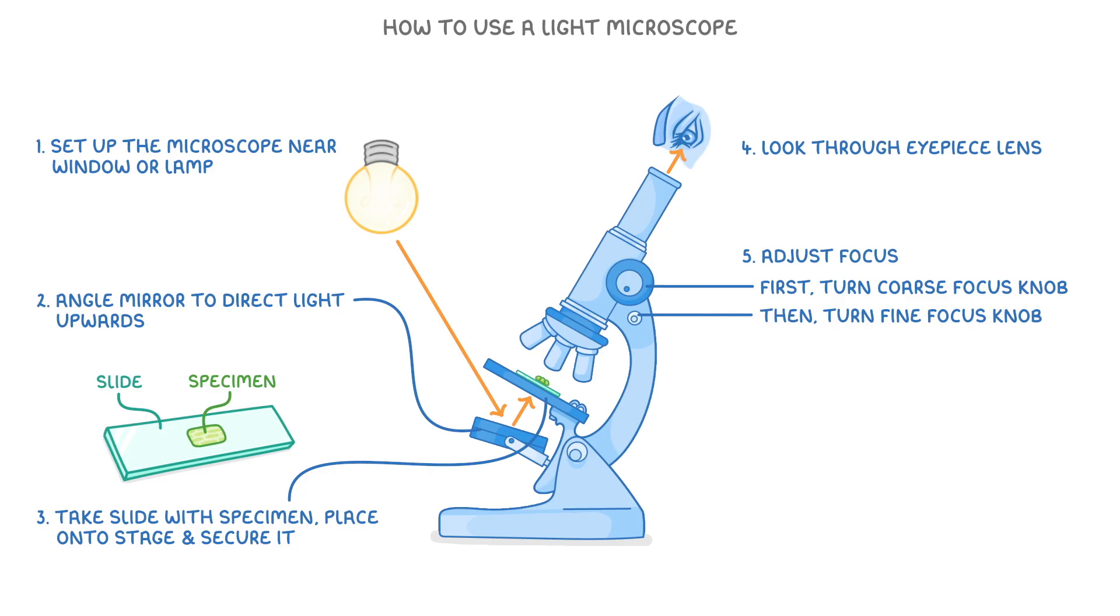Finally, this part here where the objective lenses are can rotate to switch to an objective lens with a higher magnification. Then you can adjust the focus again to bring the specimen back into clear view.